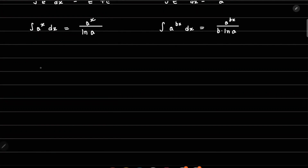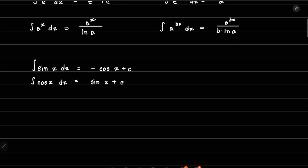Moving on to the trigonometric formulas. The basic ones are sin x and cos x. Integrating sin x with respect to x gives minus cos x plus C, and integrating cos x gives sin x plus C. It is easy to mistake the negative sign here, since the differentiation of sin x is plus cos x and the differentiation of cos x is minus sin x.